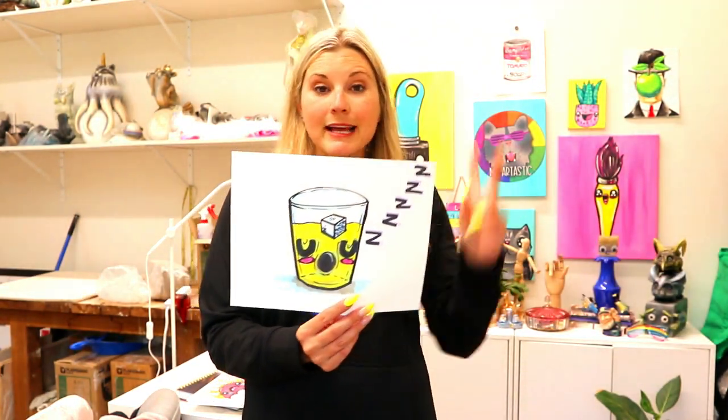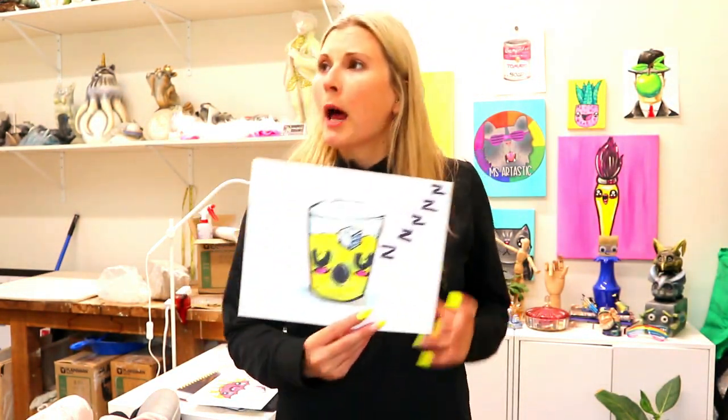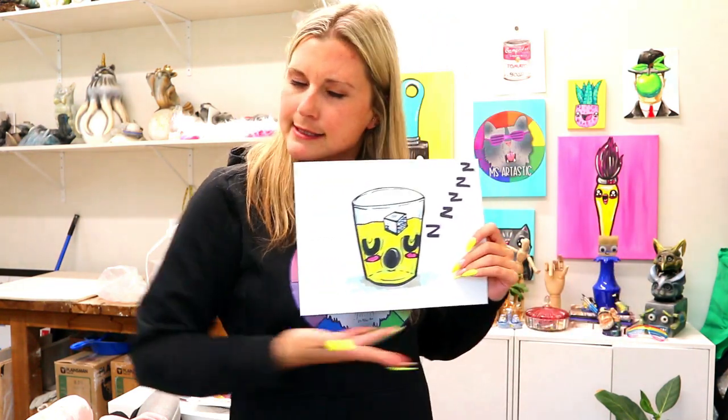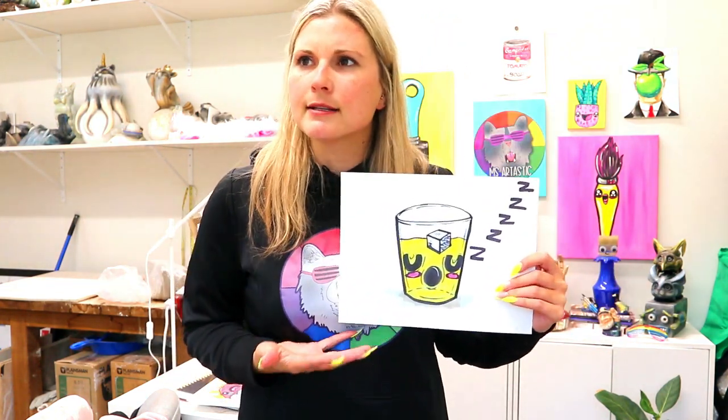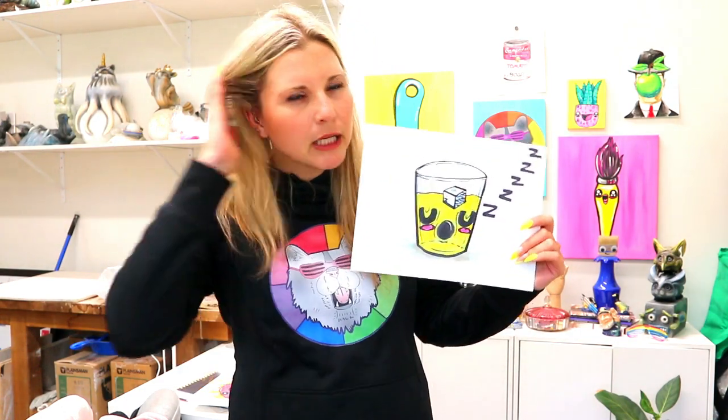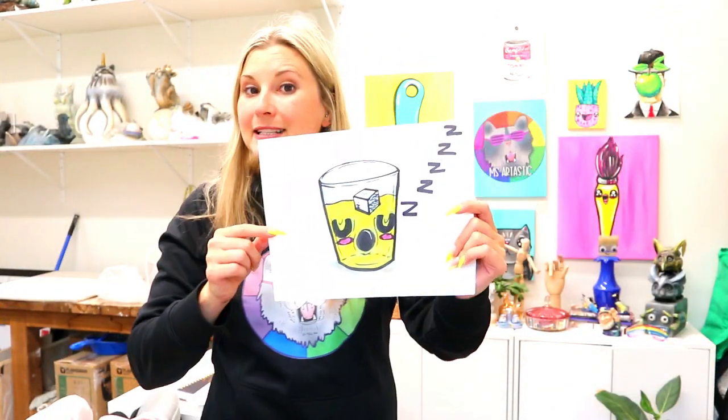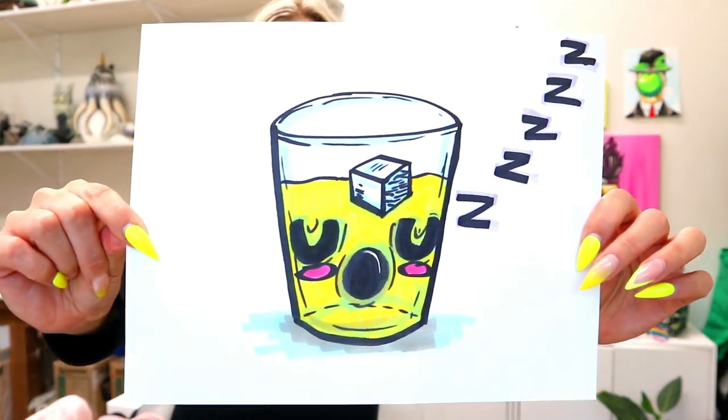I'm MzArtastic and welcome to day 27 of the June Dine Bonanza. Today we are going to draw some sleepy lemonade. Because if you just draw a normal lemonade it's just lemonade, but if you can make it sleepy now it's flappy. Alright, so grab something to draw with and something to color with and let's make some sleepy lemonade art with your ice cube.